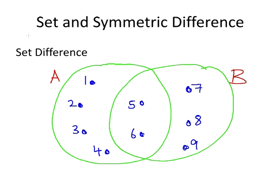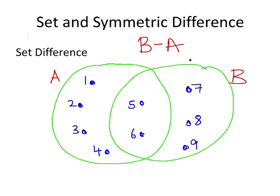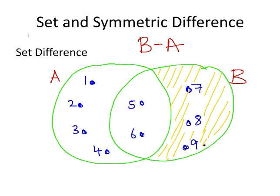Conversely, we can look at the elements of B minus A, the set difference of B minus A. Let's write that down, B minus A. And which elements, which area of the Venn diagram corresponds to that? Well, this part here. 7, 8 and 9.